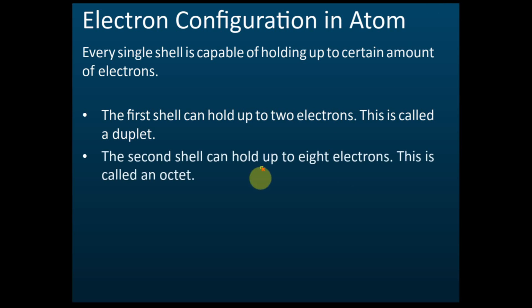The second shell can hold up to eight electrons. Why? Because the second shell is bigger, so there is more space for electrons to move around. The repelling force is not as high as in the first shell, so it can hold up to eight electrons.